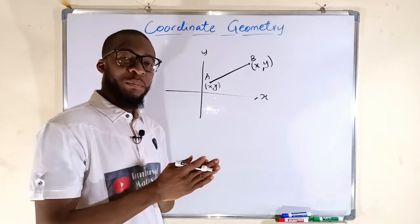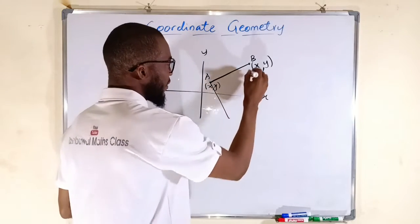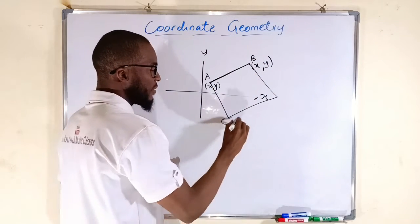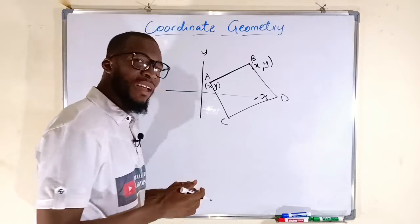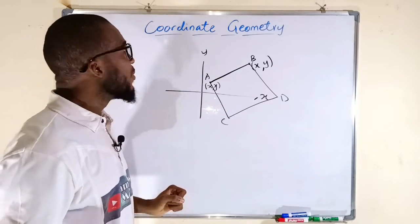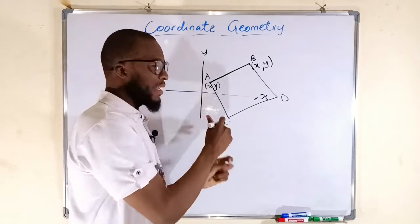We may also have other plane figures such as rectangle. I can draw another one like this. A, B, C, D. Can you see that? This is a polygon on a plane. So in general, coordinate geometry is concerned about these shapes on a plane.